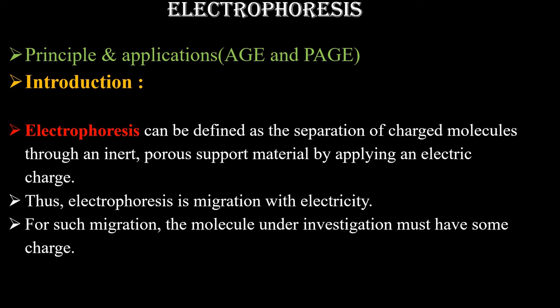What is electrophoresis? The definition of electrophoresis: electrophoresis can be defined as the movement of charged particles under the influence of an electric field. More technically, electrophoresis can be defined as the separation of charged molecules through an inert porous support material by applying an electric charge — this is the technical definition encompassing all aspects of electrophoresis.